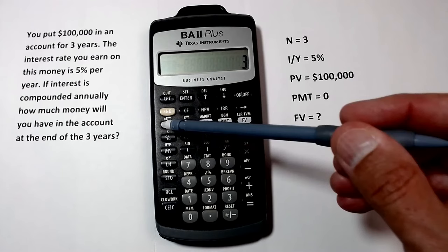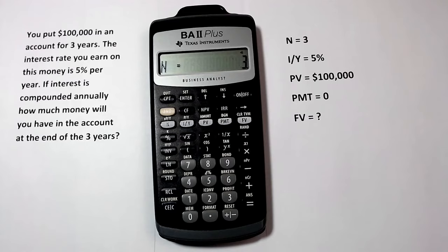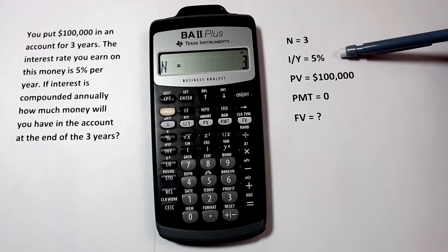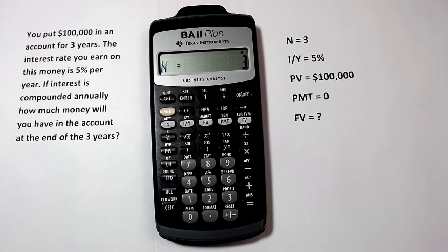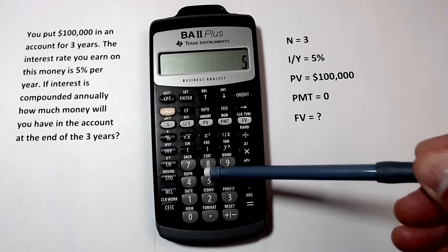The interest rate is 5%. We enter this in by pressing 5, then the I/Y button. Notice that we don't enter 5% as 0.05, like we would if we were doing this calculation manually. The time value of money function on this calculator calls for the interest rates to be entered in this way.